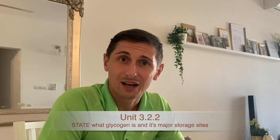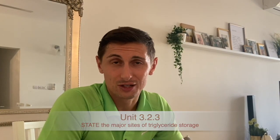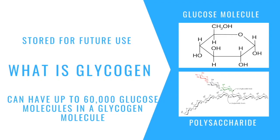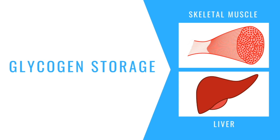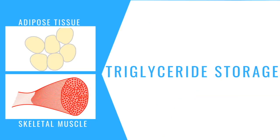The next two points look at glycogen storage and triglyceride storage and where they are within the body. Glycogen is stored glucose combined together with another glucose molecule to make a disaccharide via the condensation reaction. Once this keeps happening again and again, we get a polysaccharide — these chains can be up to 60,000 glucose molecules in a glycogen molecule — and we store this in our liver and in our muscle. Triglyceride storage is in the adipose tissue, so in your fat cells and in the muscle itself. Unused glycogen can also be transferred into triglyceride storage, as well as fats that we eat within our diet.